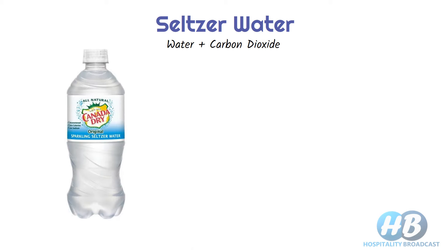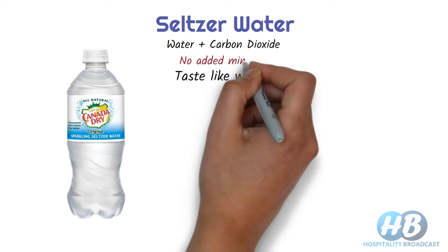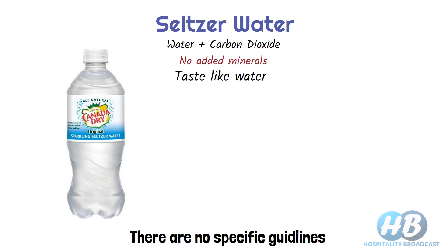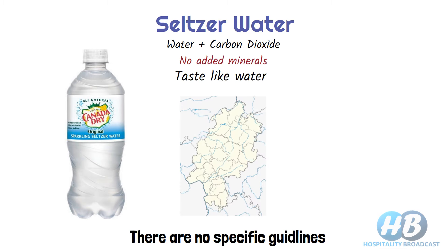Seltzer. Seltzer water is made by carbonating plain water. It is the simplest form of carbonated water and gives a true water taste, as it doesn't contain any added minerals, although some brands may make some changes. It took its name from the town of Selters in Germany, which was famous for its mineral springs. From here, naturally occurring carbonated water was bottled and used commercially since the 18th century or earlier. But nowadays, seltzer is artificially carbonated.